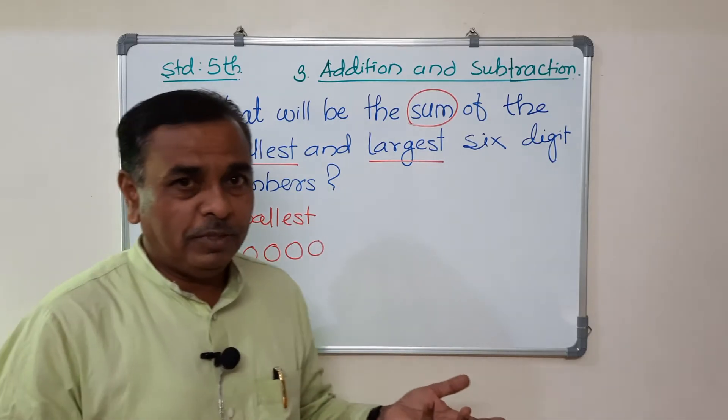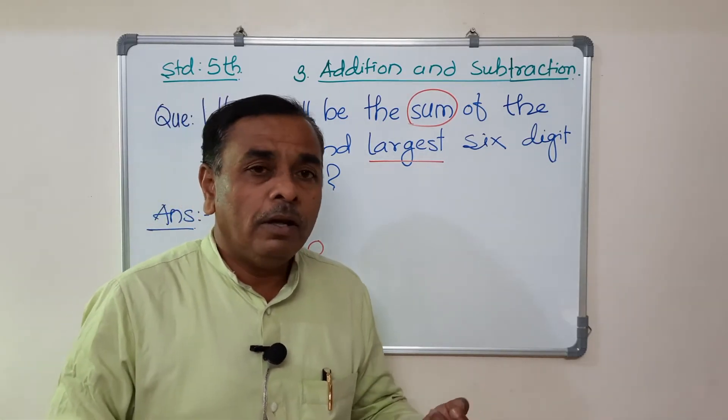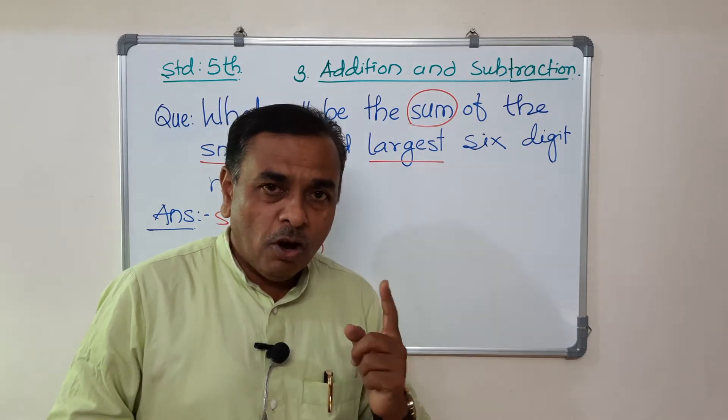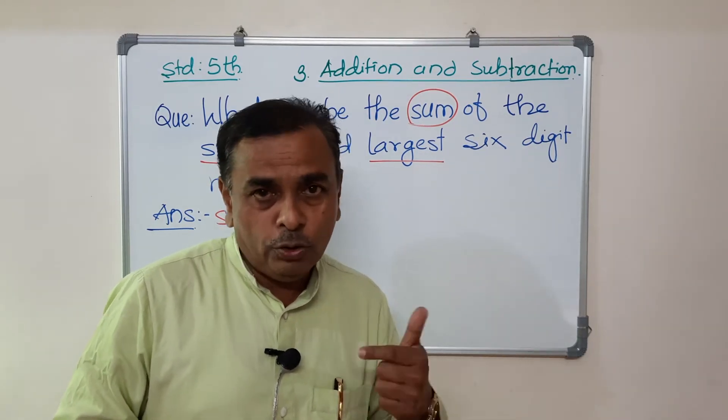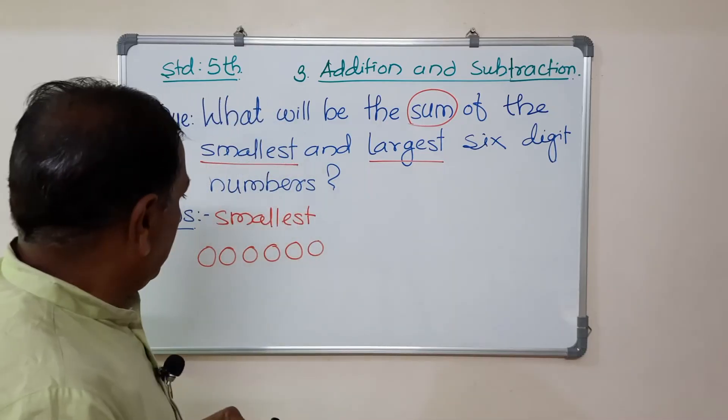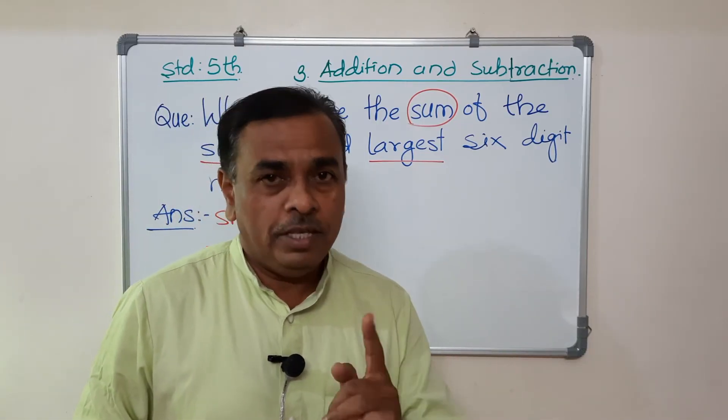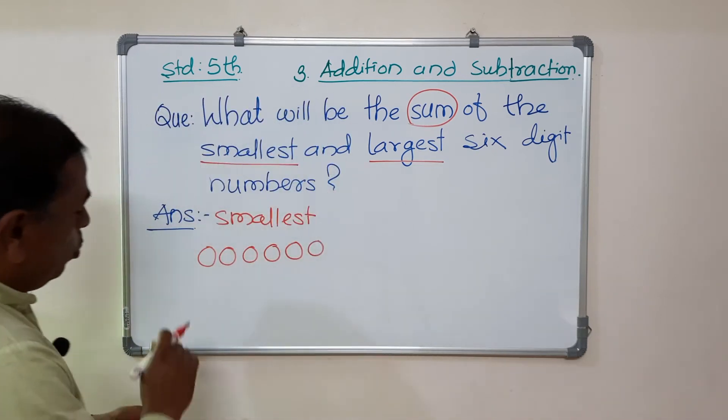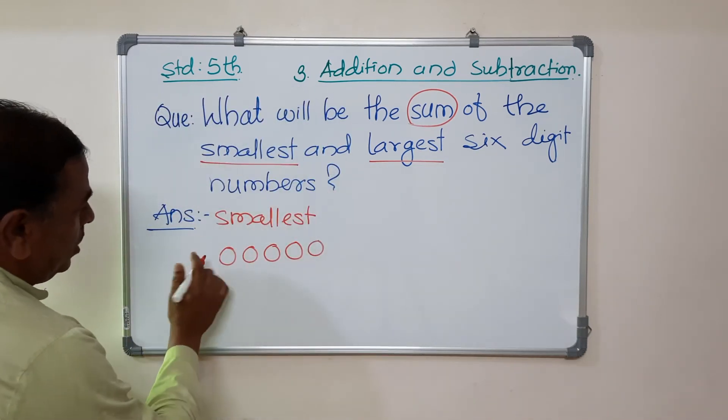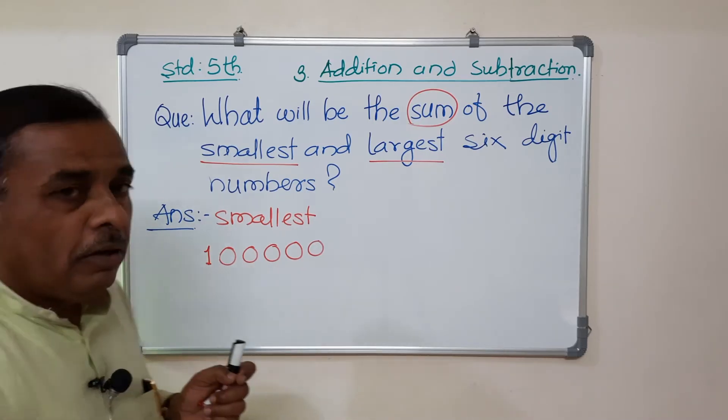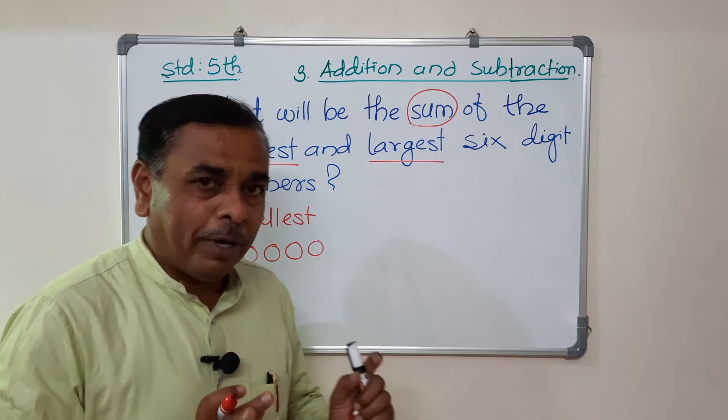There is no any number other than 0. Now, we will write here 1. Now, this is the smallest six-digit number.